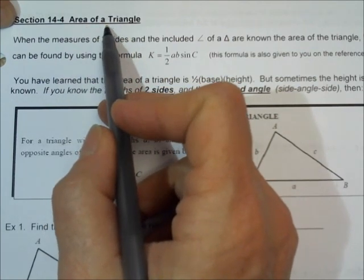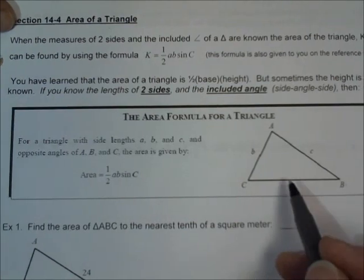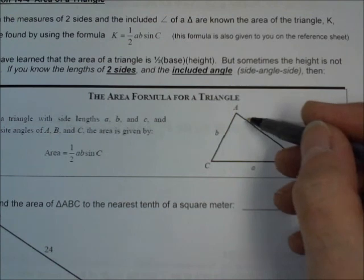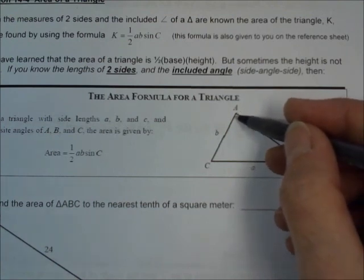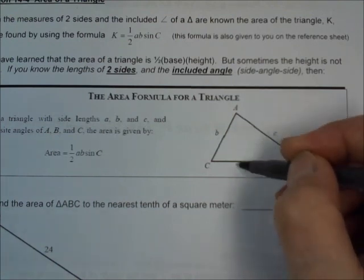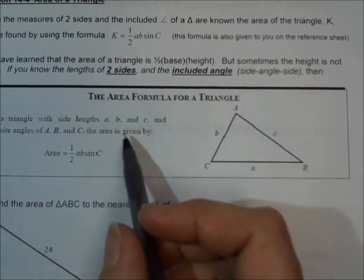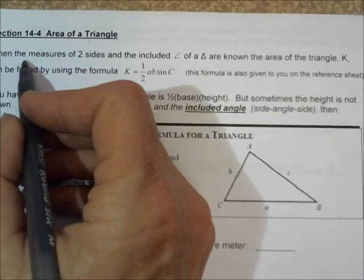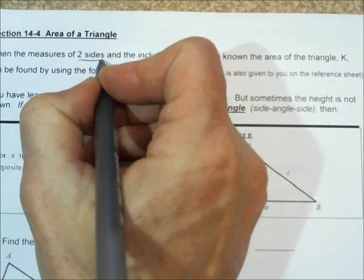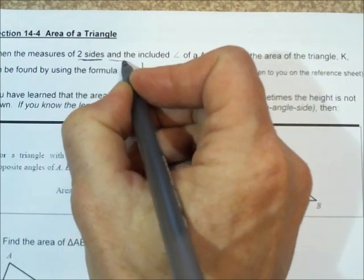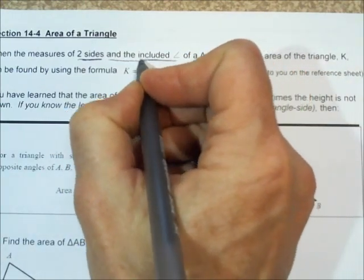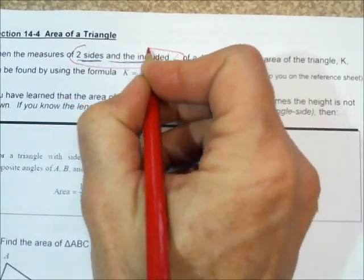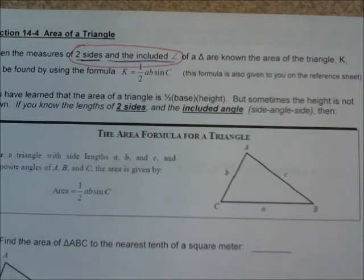One-half base times height only works if you know the height of a triangle. If you take a look at this triangle right here and we want to know the area of it, we couldn't figure it out unless we dropped a perpendicular down to the base and figured out the length of that. But there's another formula you can use if you don't know the height of the triangle, and that happens if you know the measure of two sides and the included angle. So what that means is if you have two sides and the included angle, that is like when you were in geometry class.